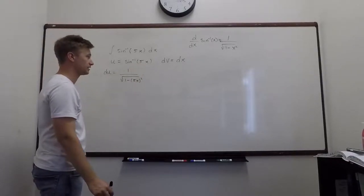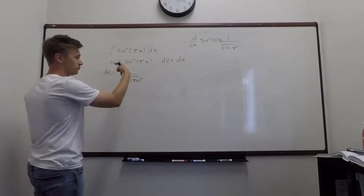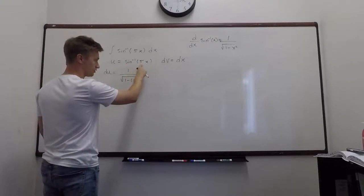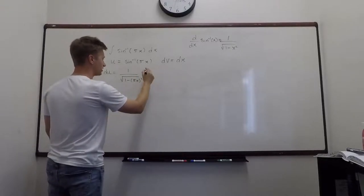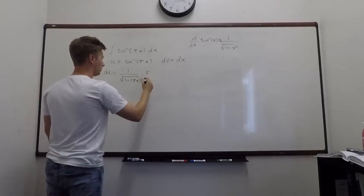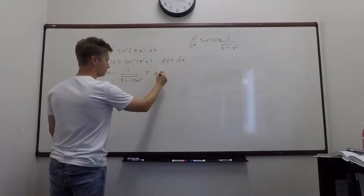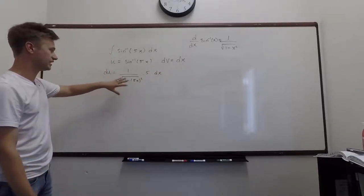So this time we have a 5x, so it's 5x squared. But then the chain rule says to multiply by the derivative of the something. So I'm saying something to refer to the 5x. So what's the derivative of 5x? It's just 5. Okay, so and then dx. Okay, so that's my du.